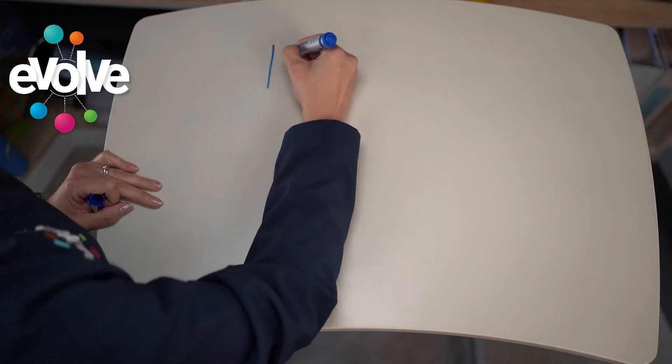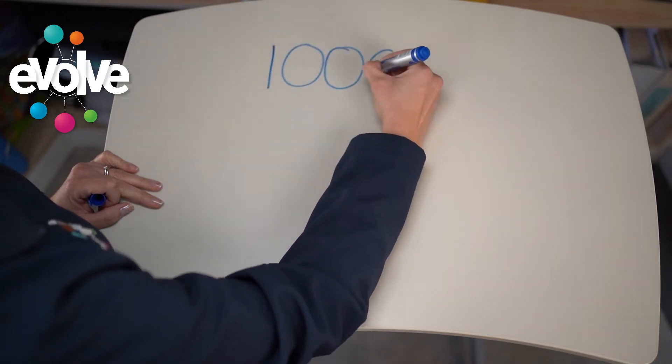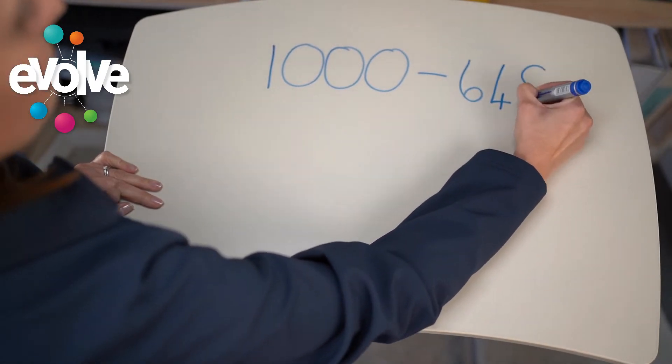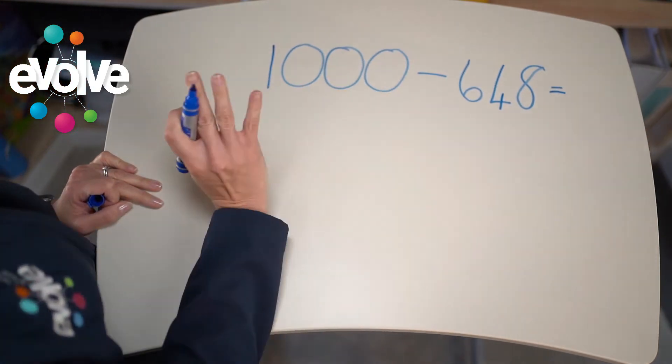So if we have 1000 we need to subtract 648. There are three steps.